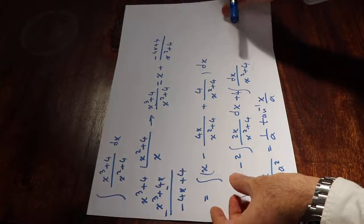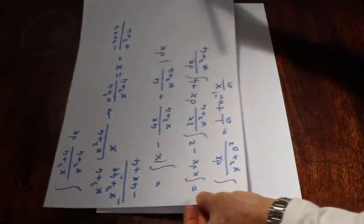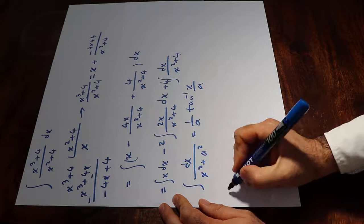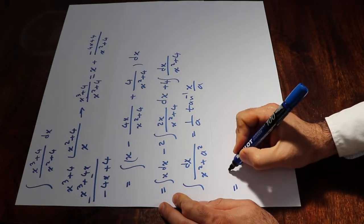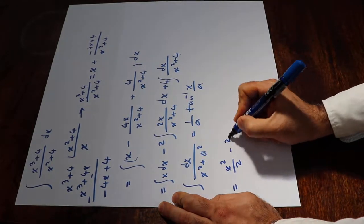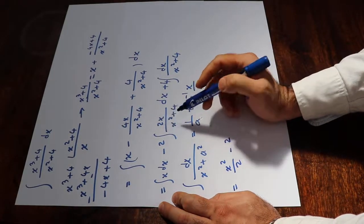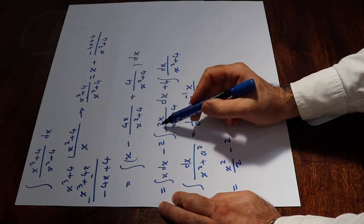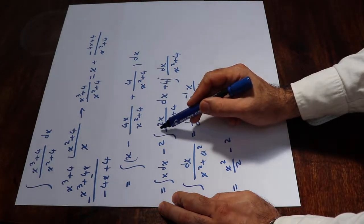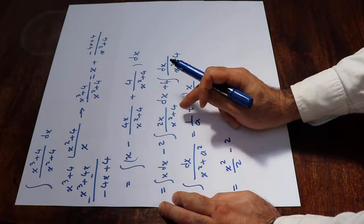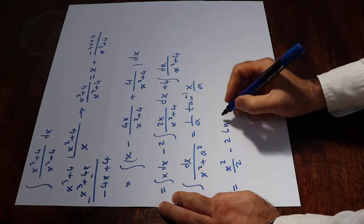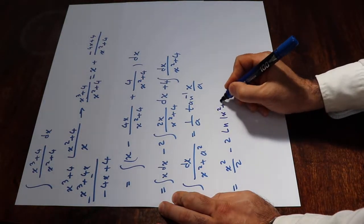That formula is important to know, and the rest is straightforward. The integral of x dx is x² divided by 2, minus 2 times the integral of 2x divided by x² plus 4. Notice that the numerator 2x is exactly the derivative of the denominator x² plus 4.